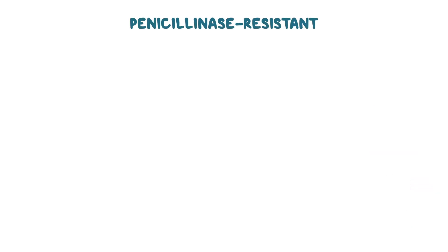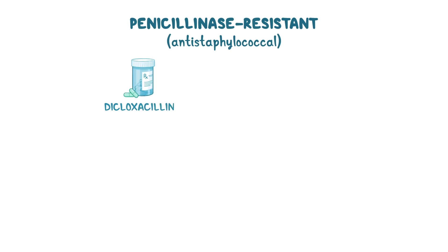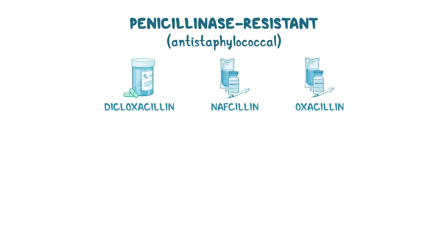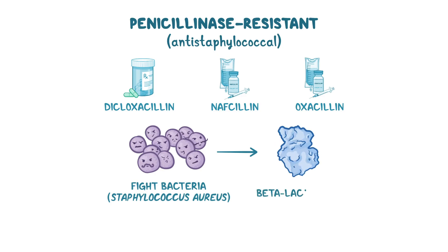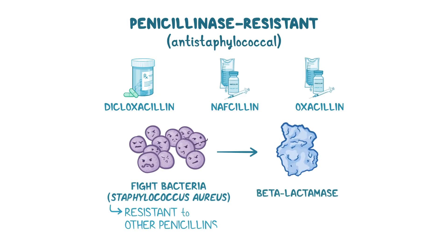Next are penicillinase-resistant medications, or anti-staphylococcal penicillins. These include dicloxacillin, which is given orally, as well as nafcillin and oxacillin, which are administered intramuscularly or intravenously. They were created to fight bacteria like Staphylococcus aureus, which often have the beta-lactamase enzyme, making them resistant to other penicillins.